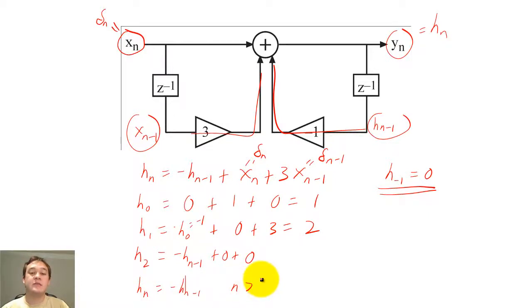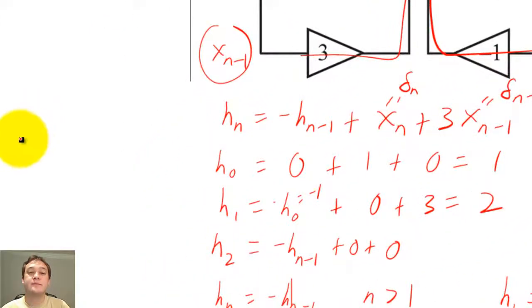h sub n will simply oscillate between 2 and negative 2, and this oscillation can be described mathematically. Finally, we summarize h of n as a piecewise function.